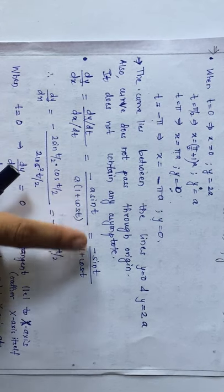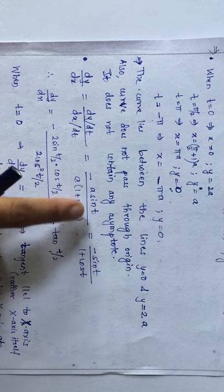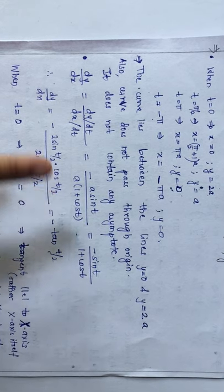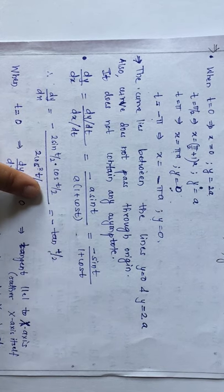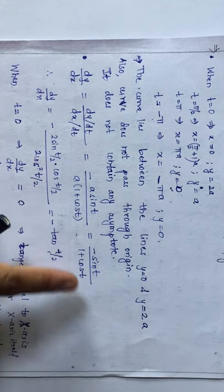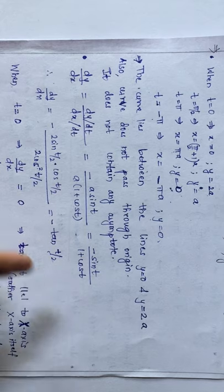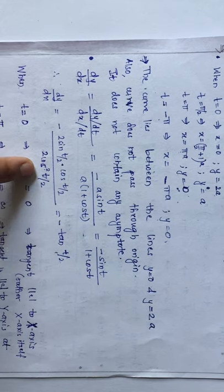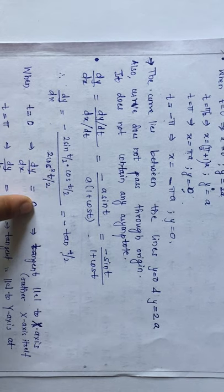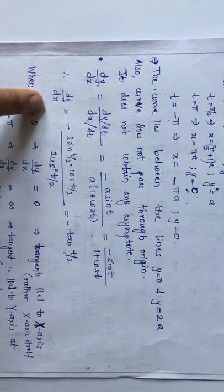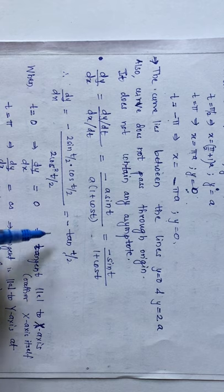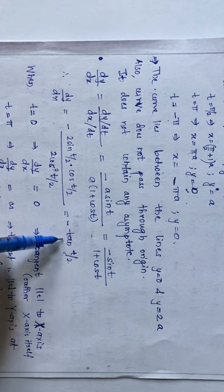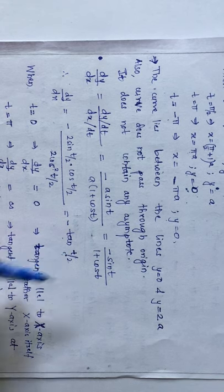Using half-angle identities: sin t = 2 sin(t/2) cos(t/2) and 1 + cos t = 2 cos²(t/2). Substituting, dy/dx simplifies to −tan(t/2).